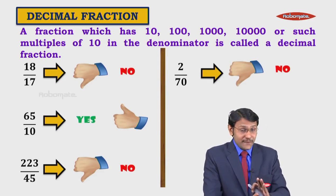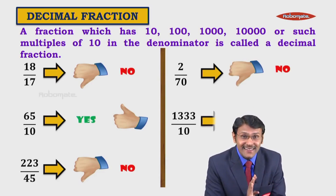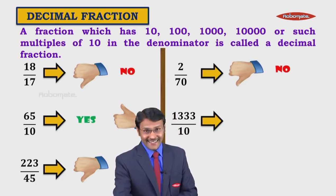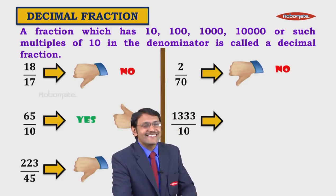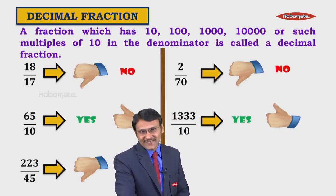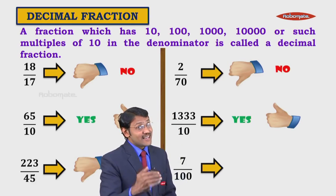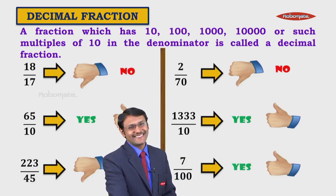Because the denominator should only be 10, 100, 1000 and so on. Next is 133 upon 10 — of course yes, it is a decimal fraction. Next is 7 upon 100 — and the answer is yes. Let us proceed.